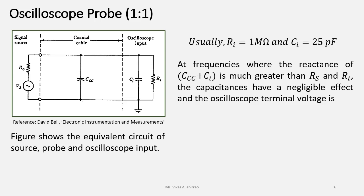At the frequencies where the reactance of Ccc plus Ci is much greater than the source resistance Rs and the input resistance of oscilloscope Ri, the capacitances have a negligible effect and the oscilloscope terminal voltage Vi is given by Vi equals Vs times Ri upon Rs plus Ri.